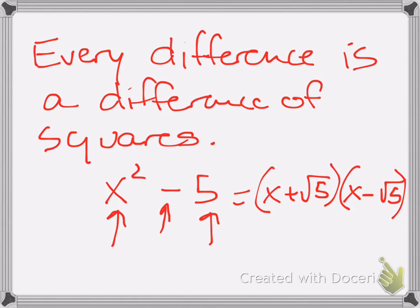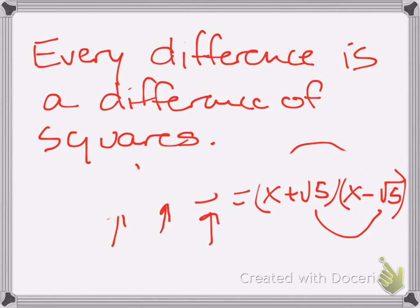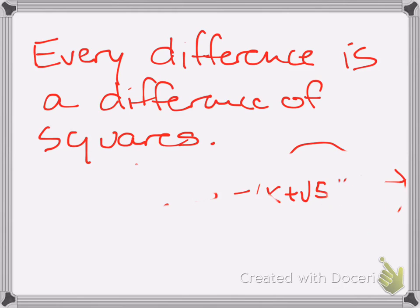X plus the square root of 5 times x minus the square root of 5. That's a conjugate pair, so it's going to result in x times x minus the product of the square root of 5 times the square root of 5. X times x is x squared; square root of 5 times the square root of 5 is 5. Every difference is a difference of squares.